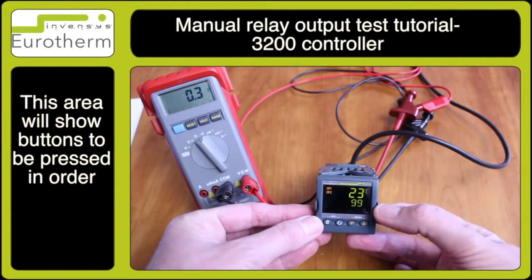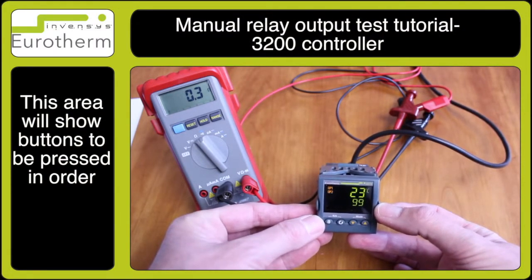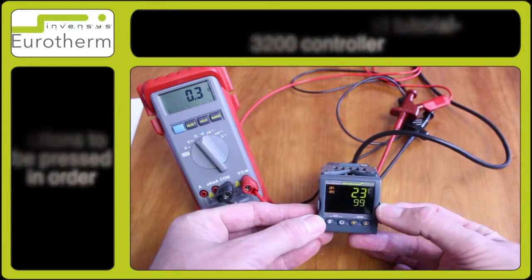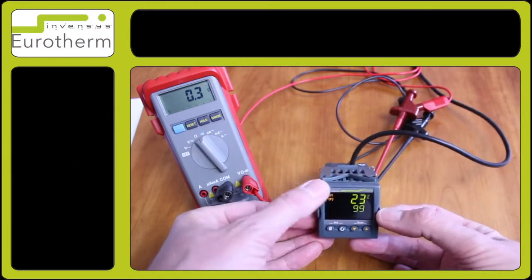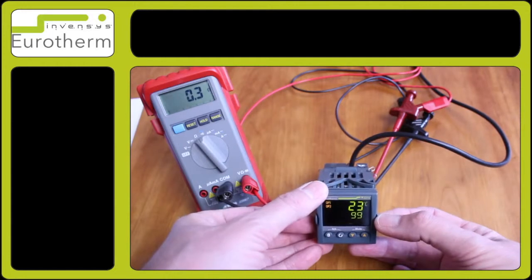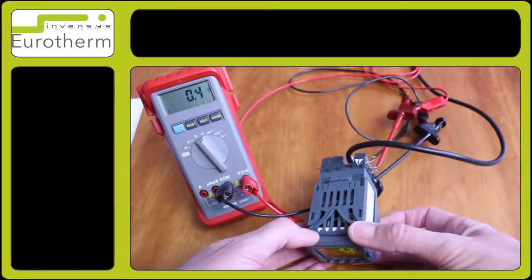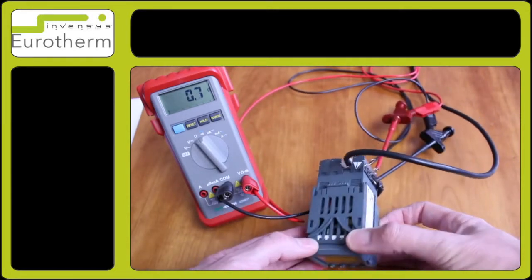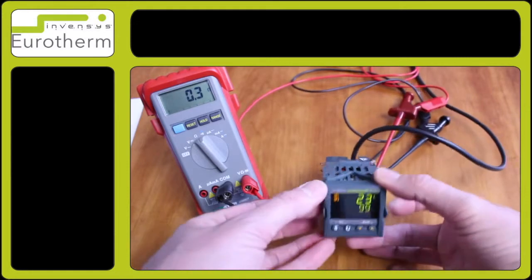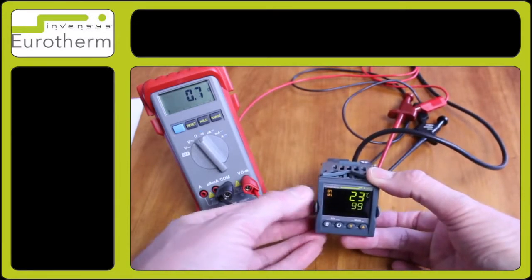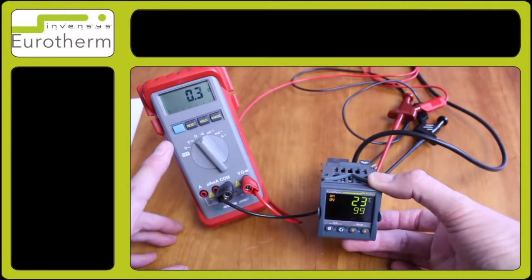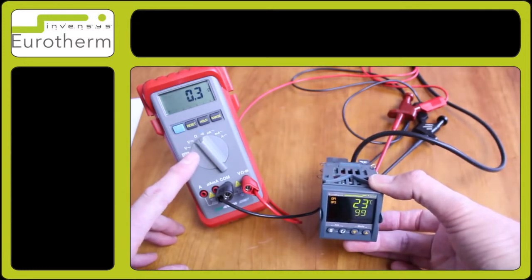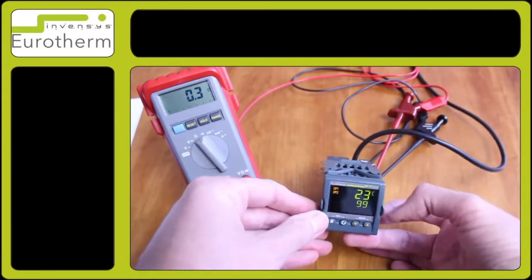In this tutorial I will demonstrate how to test your relay output is working. I would suggest switching off the controller and removing the relay wires and screwing down the terminals on the back of your instrument. In this particular test I've connected up a digital multimeter with an ohmic setting and connected it to our relay output.